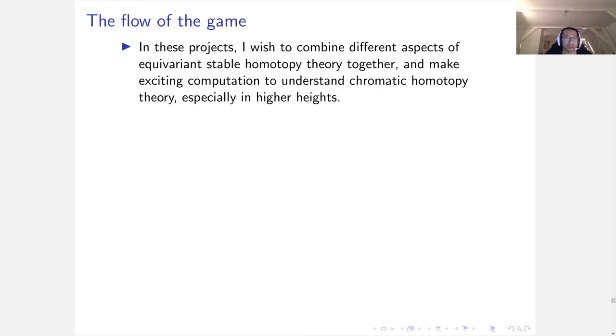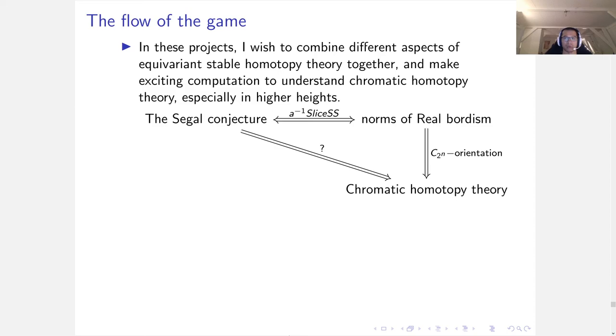In this project, I wish to combine different aspects of equivariant stable homotopy theory together and make exciting computations to understand chromatic homotopy theory, especially in higher heights. This is the picture I'm talking about today. The Segal conjecture is related to the norm of real bordism by localized slice spectral sequence, and using equivariant orientation, we can understand chromatic homotopy theory from equivariant stable homotopy theory. I'm currently working on different aspects of this picture.